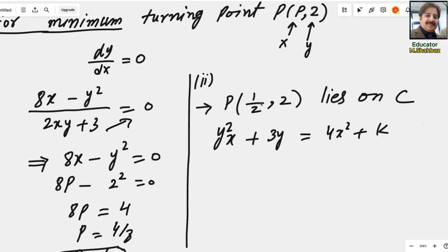Use the values of x and y. You know this is x and 2 is y. So it will be 2² × 1/2 + 3 × 2 = 4 × (1/2)² + k. From here you will get the value of k. Simplifying, 4 divided by 2 is 2, 2 + 6 is 8. So overall it is 8. This is 8 and this is 1/4. 4 is cancelled, it will be 1 + k, and k equals 7.